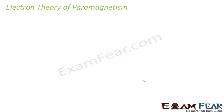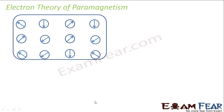Theory of paramagnetism — how do we explain the paramagnetic behavior of materials? When there is no external magnetic field applied, each atom has a net magnetic moment. It is not zero in this case. The orbital magnetic moment and the spin magnetic moment do not exactly cancel each other out, so there will be a non-zero magnetic moment for each atom.